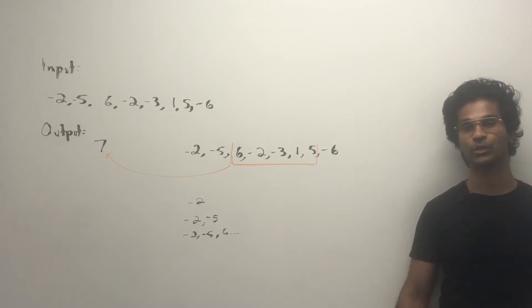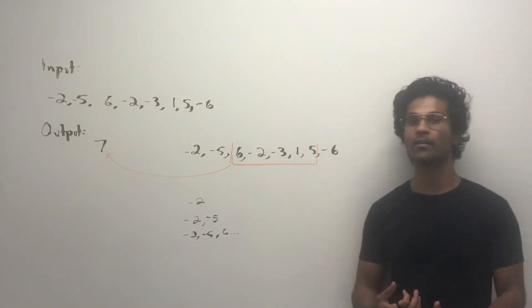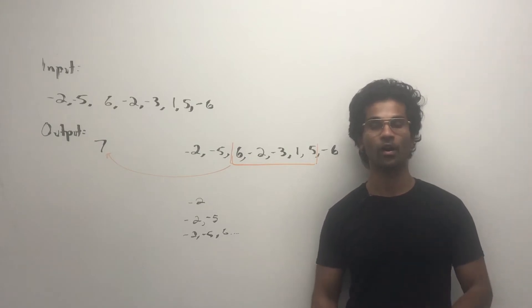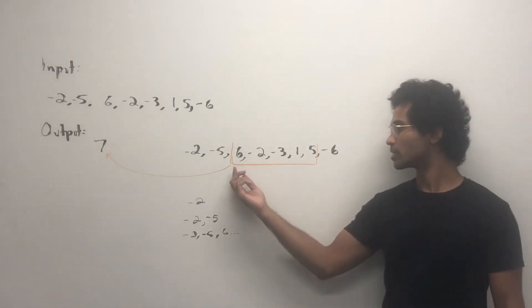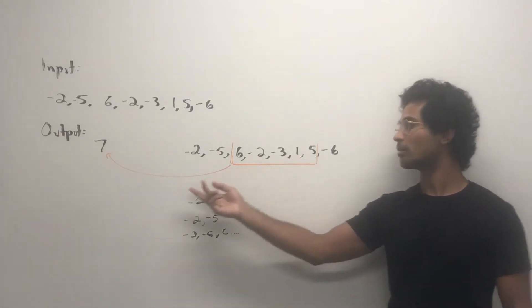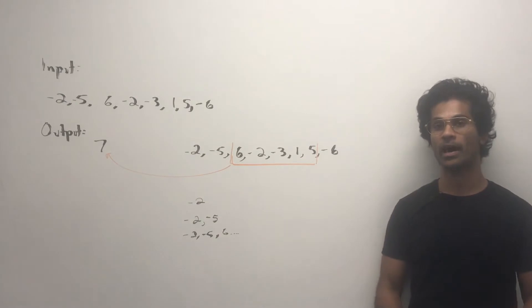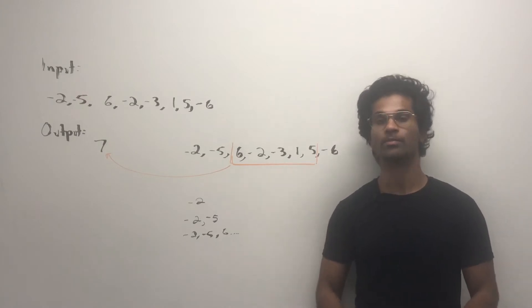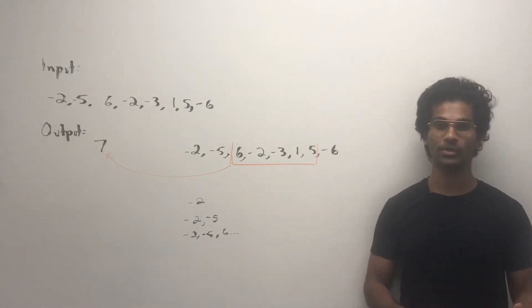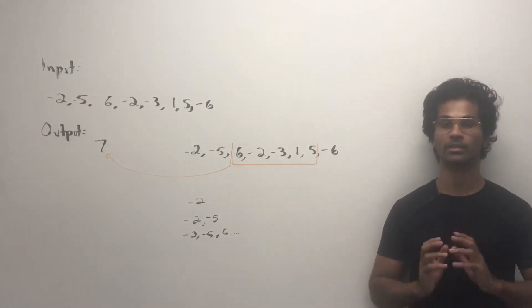The input is going to be an integer array and the output is going to be an integer. We have to find the sum of the subarray, which is going to give us the maximum output. In this example, starting from six, ending at five gives us an output of seven because we are going to add up the numbers from six, negative two, negative three, one and five.